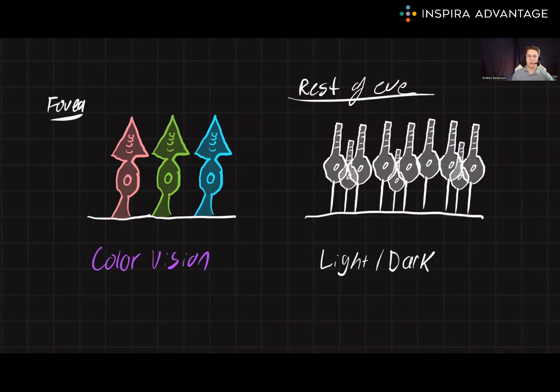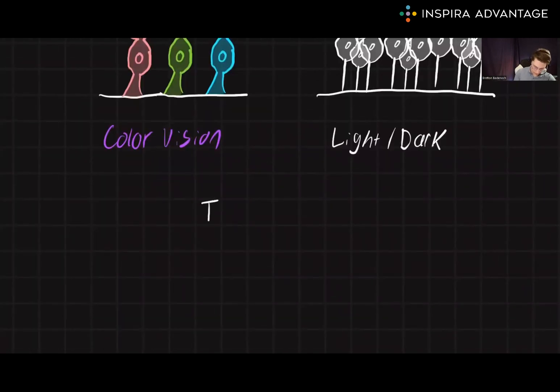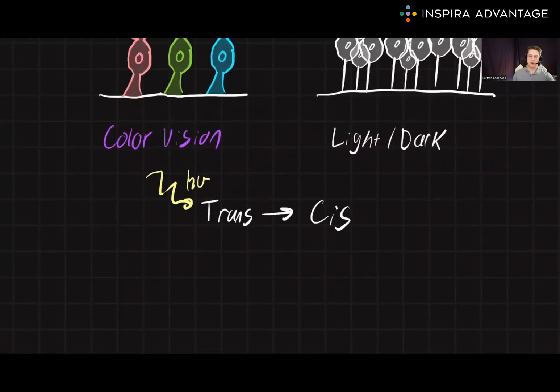Rods and cones both work similarly to each other. Both contain an opsin-type G-protein coupled receptor that go from trans in the dark to cis in the light. This trans-cis transition causes a signal within the rod or cone to occur. Ultimately, this signal reaches the occipital lobe and the perception of vision occurs.